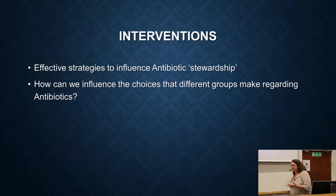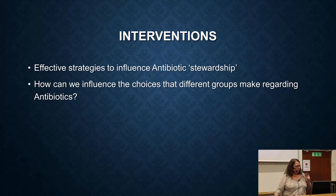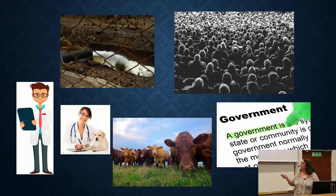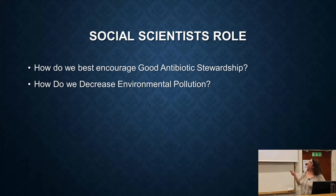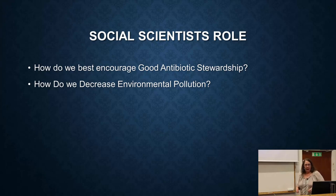The next theme is interventions — how do we influence people to do the right thing? The people we want to influence are doctors, veterinarians, the livestock industry, and governments, as well as the general public. The role of social scientists is to encourage good antibiotic stewardship and decrease environmental pollution. There's no clear answer, but there are hints, as you've heard about in recent lectures.